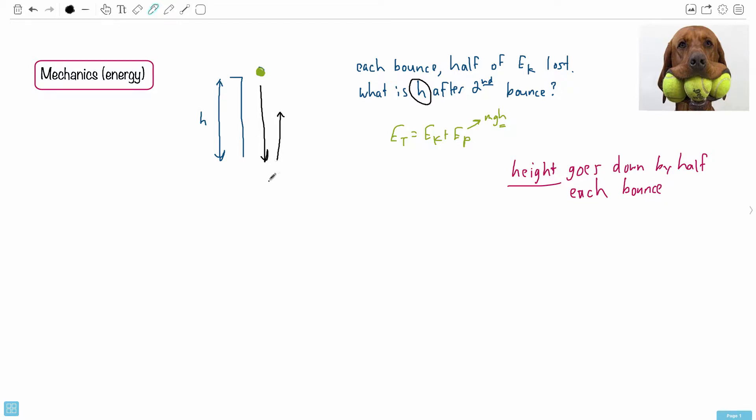After bounce number one, what is its height then? Well, its height is H initially, so therefore it must be H over 2. Now that's after the first bounce. Then what does it do? It drops down and then it goes back up again.